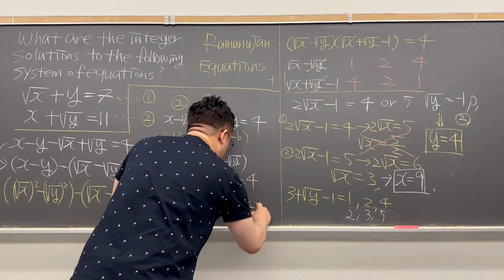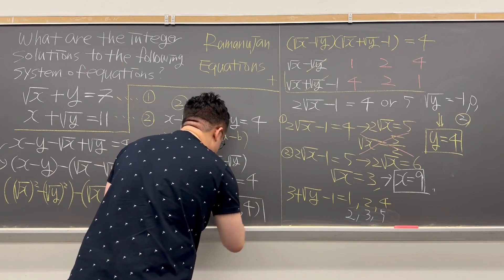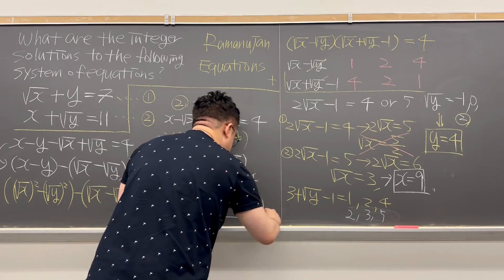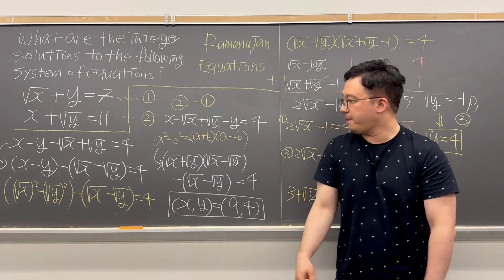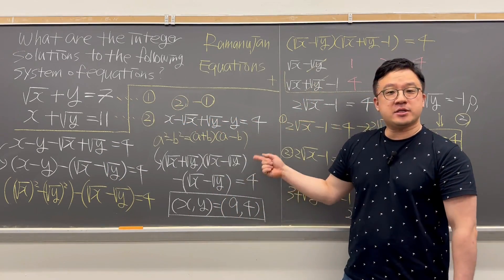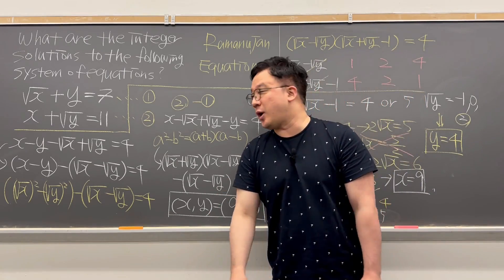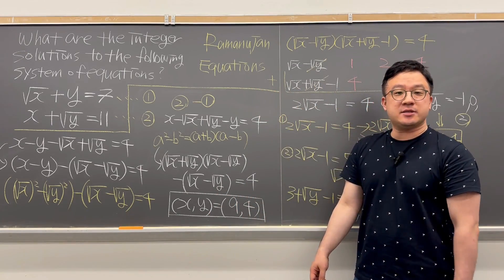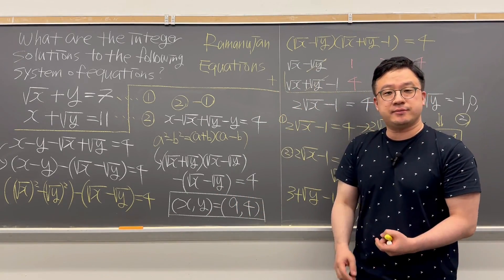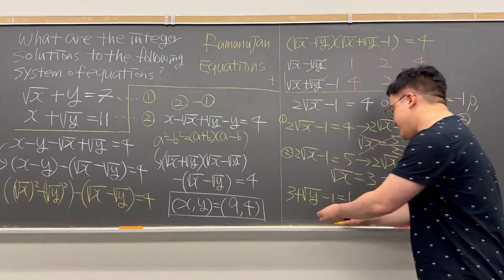So the only integer solution to this system of equations is x = 9 and y = 4. Pretty interesting Ramanujan equations! I'll be back with more videos and more questions like this sometime soon.